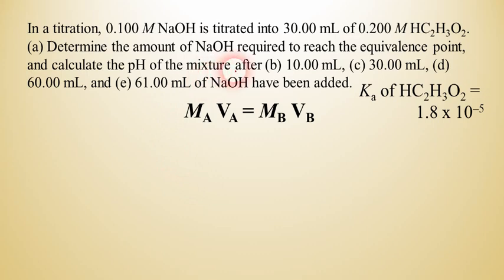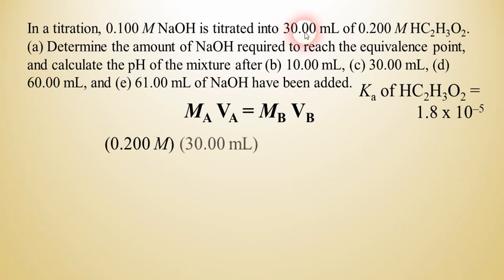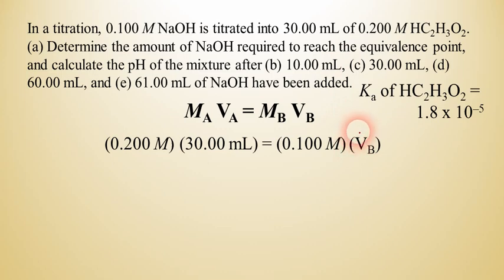The molarity of the acid is 0.200 molar, and the volume of the acid is 30 milliliters. The molarity of the base is 0.100 molar. The volume of the base is what we're trying to find — the amount of sodium hydroxide required to reach the equivalence point — so V_B is our unknown. We do the simple algebra and find that the answer is 60 milliliters. So it will require 60 milliliters to get to that equivalence point.